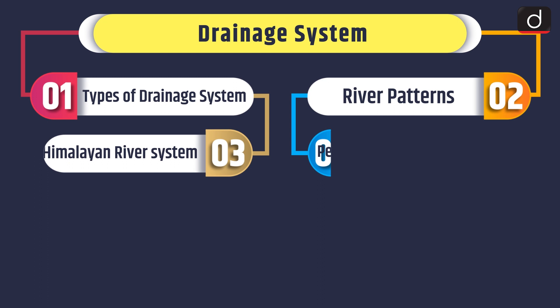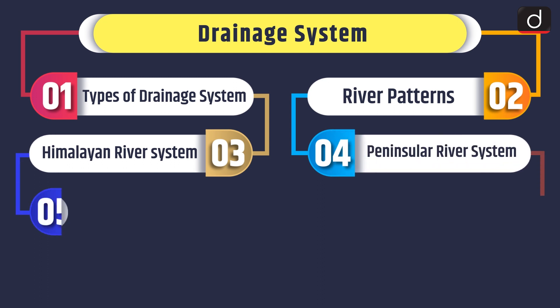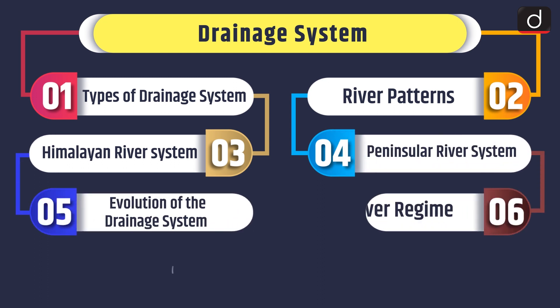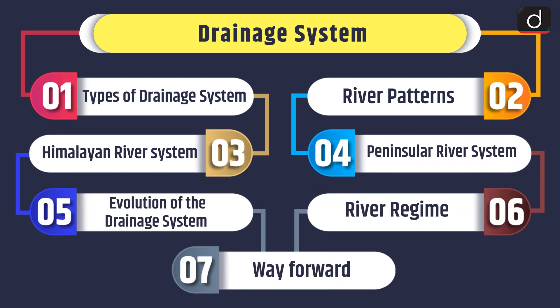Hello everyone, welcome to another series of Mind Map. Today we will discuss about drainage system. Under this topic we will discuss about types of drainage system, river patterns, Himalayan river system, peninsular river system, evolution of the drainage system, river regime and way forward.